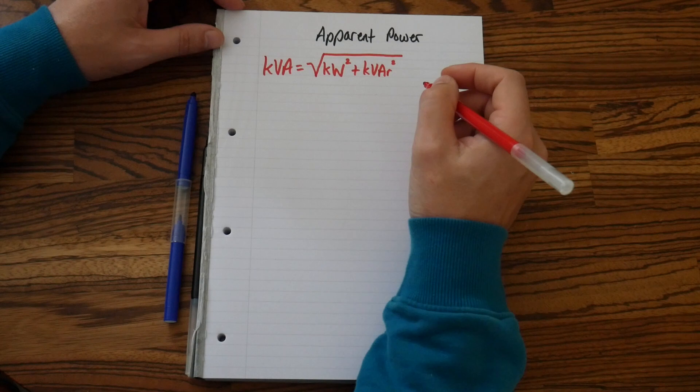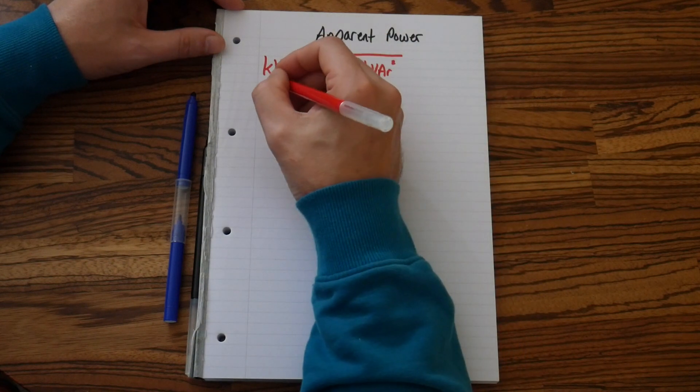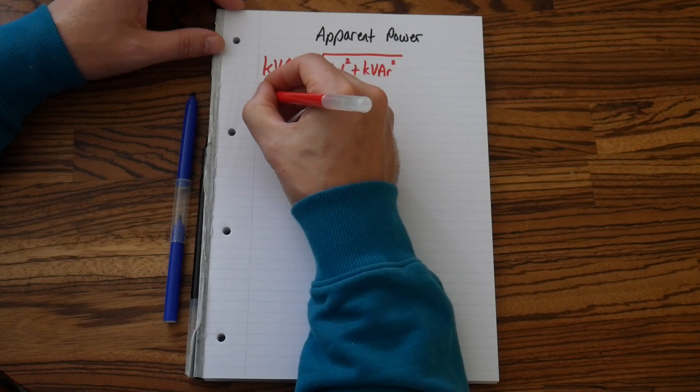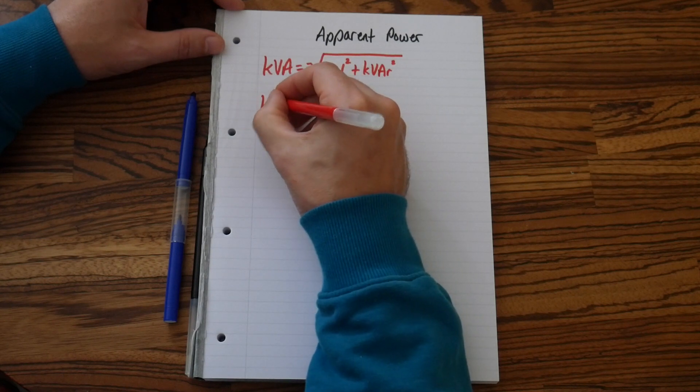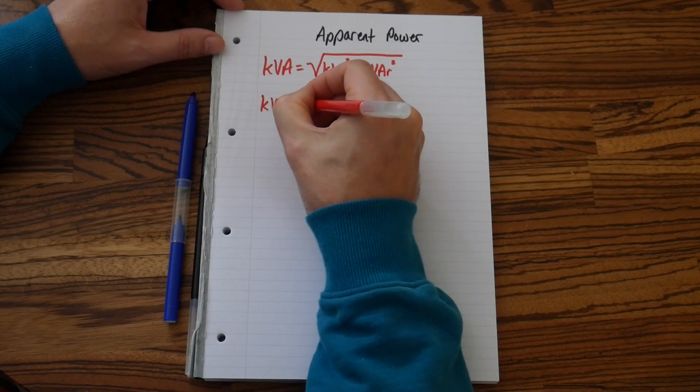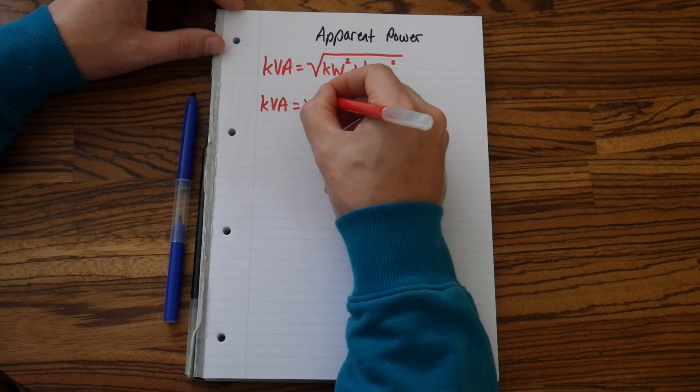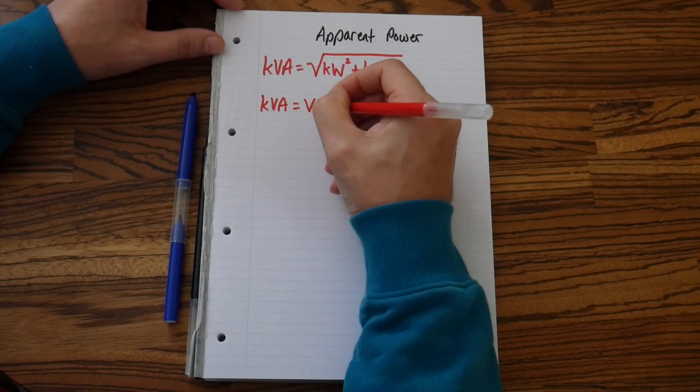And the last equation that we can use here to work out our apparent power is kVA equals volts times amps.